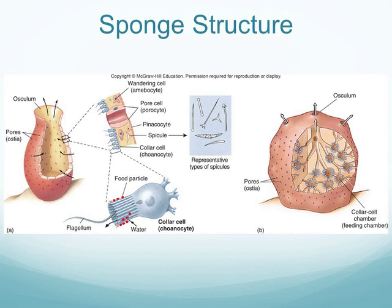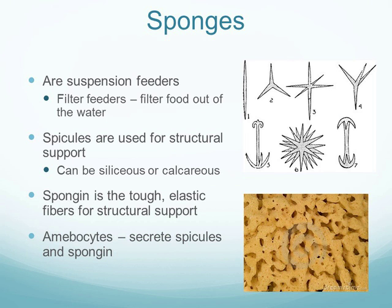Amoebocytes reside within the sponge tissue and create spicules — structures made of silica or calcium carbonate that protect the sponge and provide structural support. Porocytes are cells that form pores to bring water into the sponge. Water enters through the porocytes and exits through the osculum.